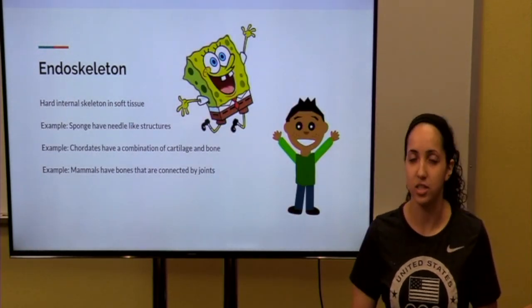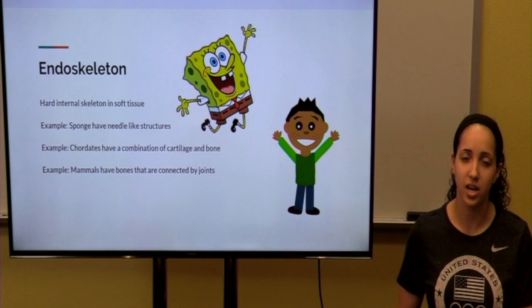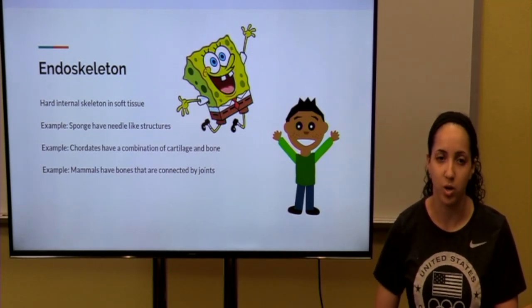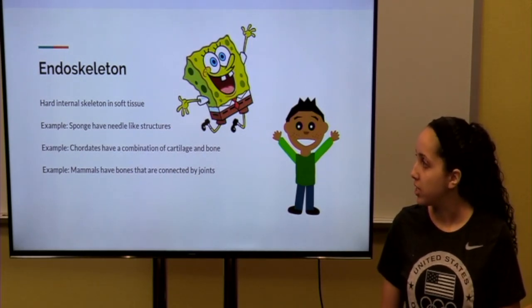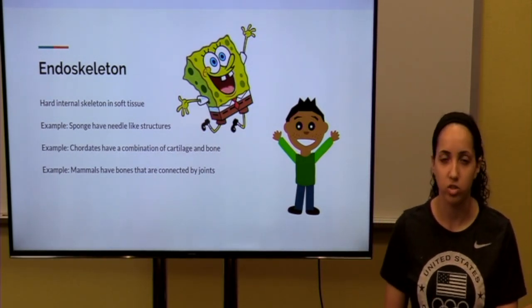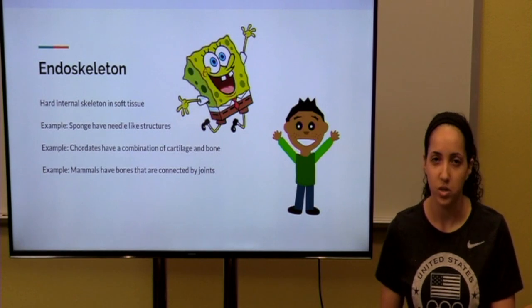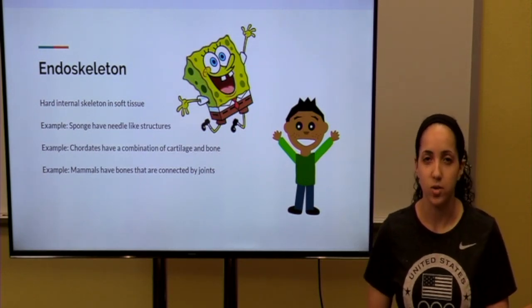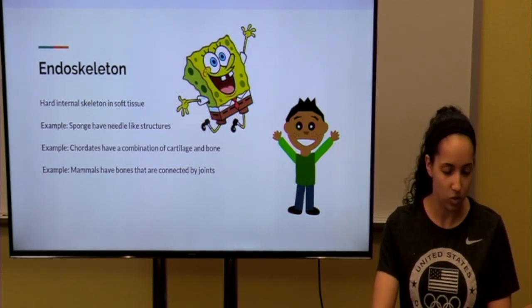The third type is the endoskeleton. The endoskeleton is skeletons inside the body. An example of an animal with this is the sponge, and it has needle-like structures that act as the endoskeleton. Mammals also have an endoskeleton. The endoskeleton is made out of bones and joints.